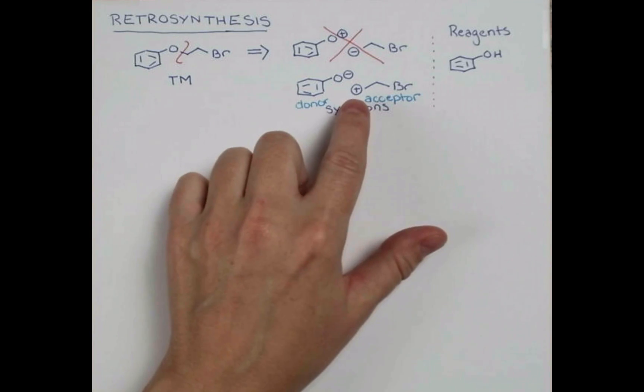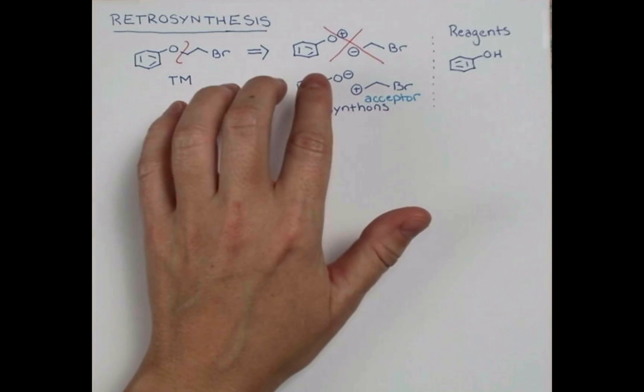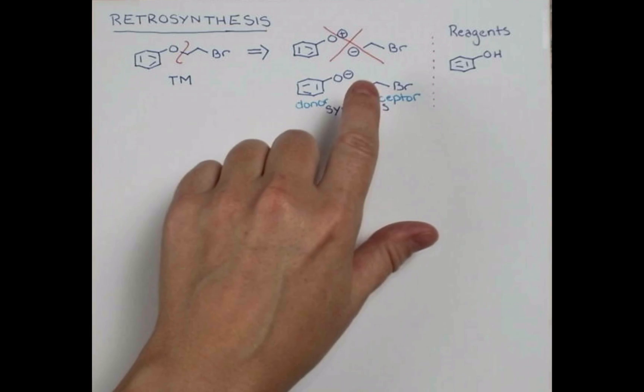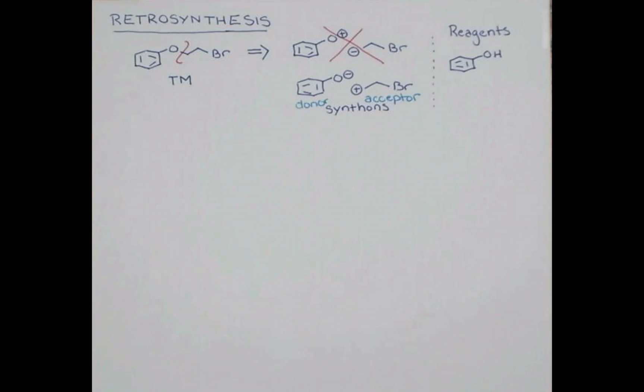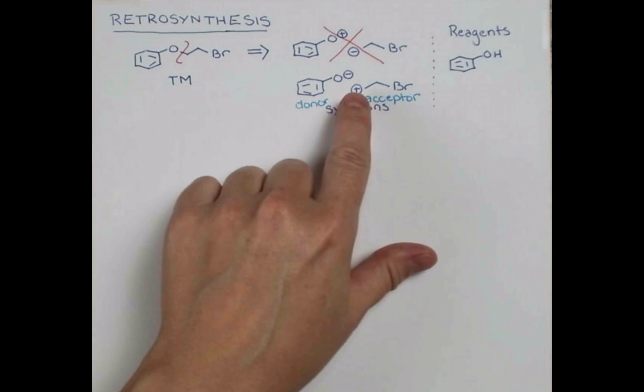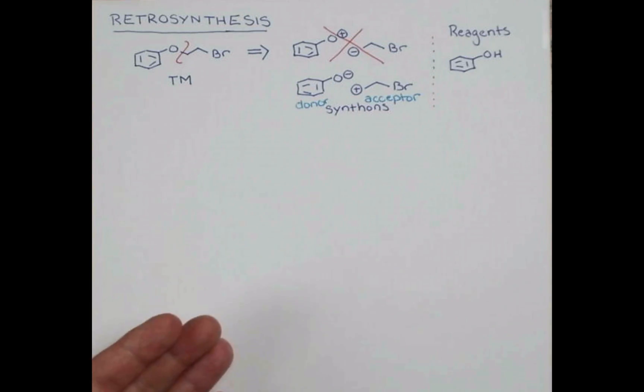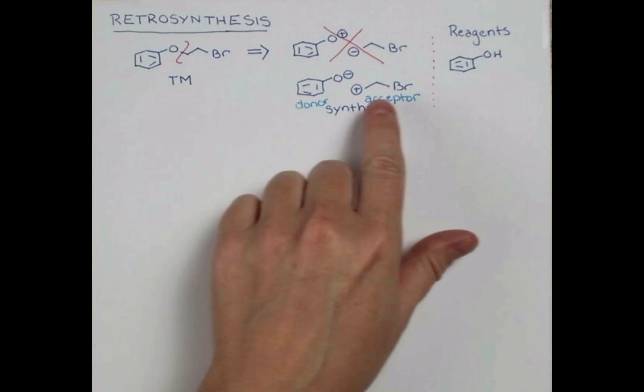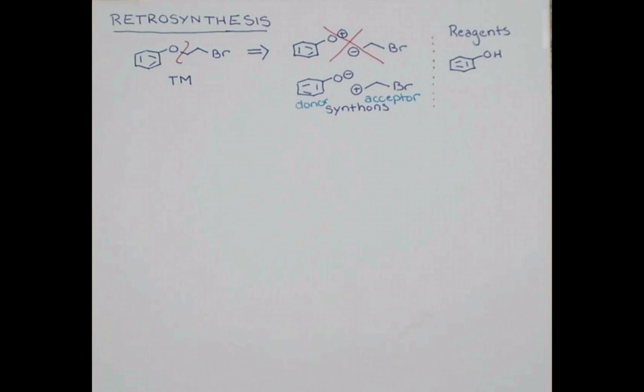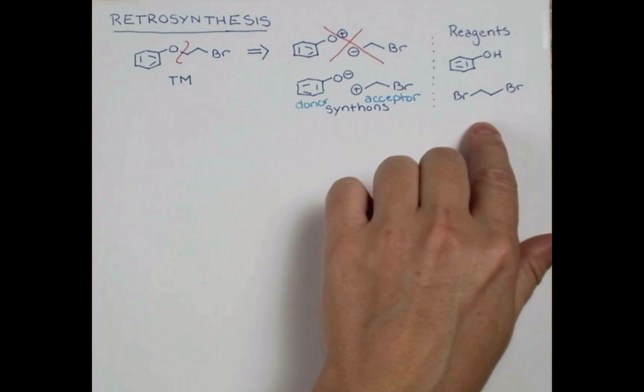And then something like this would need to have a leaving group on it. So to have carbon have positive character, something that's inductively electron withdrawing will give that positive character. And if the leaving group leaves, we form a carbocation. Of course, this is a primary carbocation. But remember, this is a synthon. This is just a device to help us think about what we need to put together. So maybe we could have just a bromide on this side as well. And one of the bromides will leave in our reaction. Our reagent will be 1,2-dibromoethane here.